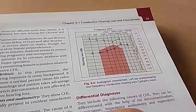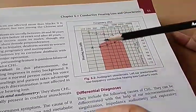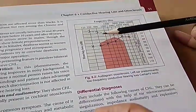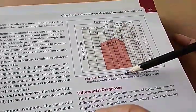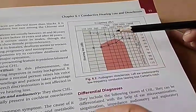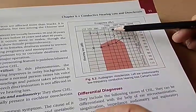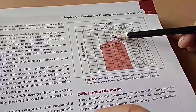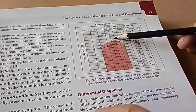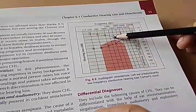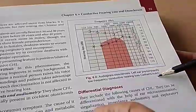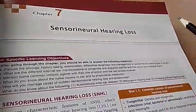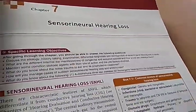We are in Chapter 6 where they are talking about otosclerosis. This is the audiogram in otosclerosis, where you can see a notch at 2000 Hz in the bone conduction — this is Carhart's notch. Coming to sensorineural hearing loss, here they will talk to you about common causes.